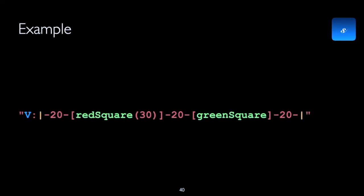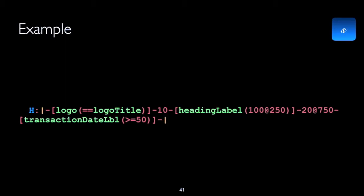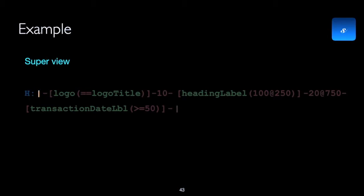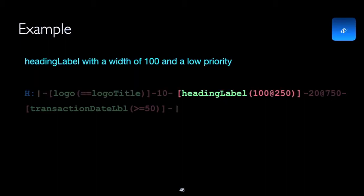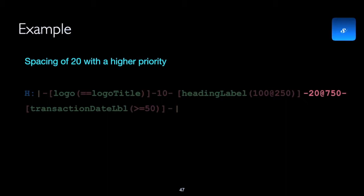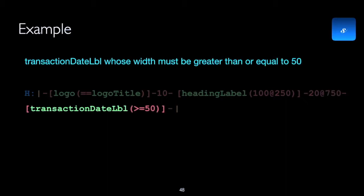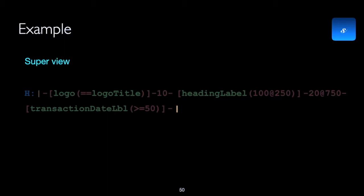Here is another example of a visual format language string in the vertical direction — see if you can visualize how the views would appear. Here is a more elaborate example: the horizontal direction, followed by the superview, a standard spacing, followed by the logo view whose width is equal to the width of logo title, followed by a spacing of 10, followed by the heading label whose width must be 100 with a priority of 250, followed by a spacing of 20 with a priority of 750. Then we have a transaction date label whose view must be greater than or equal to 50 points, followed by a standard spacing, and then the trailing edge of the superview.